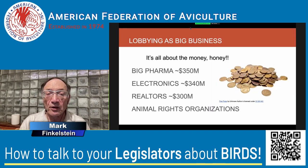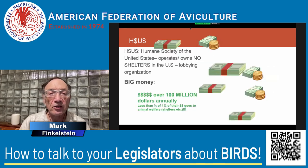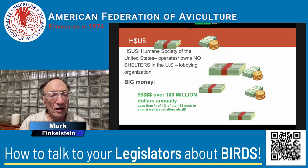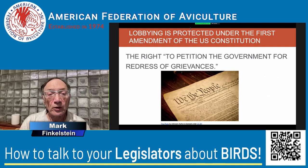Lobbying is big business — it's really all about the money. Big pharma spends 350 million dollars a year, electronics and phone companies 340 million. Realtors and animal rights organizations like the Humane Society of the United States — which operates no shelters and is basically a lobbying organization — spend something like over a hundred million dollars a year. Lobbying is protected under the First Amendment of the U.S. Constitution — we have the right to petition our government to redress grievances.